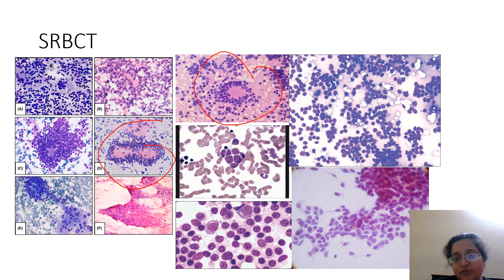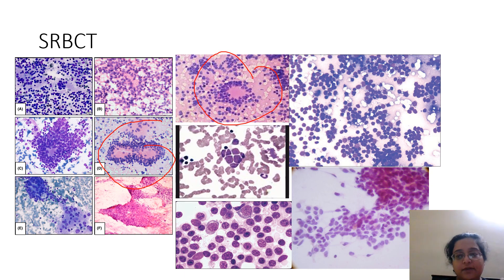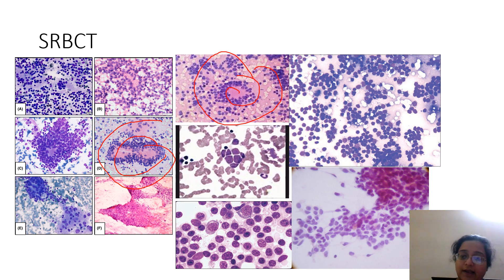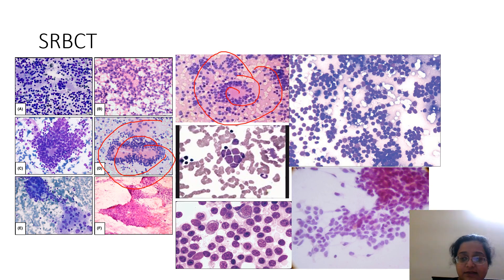In small round blue cell tumors, background is very important in my personal experience. If you're getting a lot of neuropil or rosettes, you can be more confident this is a neuroblastoma or medulloblastoma. We've studied types of rosettes — true and false rosettes, Homer-Wright and Flexner-Wintersteiner rosettes. If it's a lesion in the eye, it's a retinoblastoma. Vague rosetting could be Ewing's sarcoma; neuroblastoma can have neuropil and rosetting.